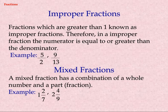Improper Fractions. Fractions which are greater than one are known as improper fractions. Therefore, in an improper fraction the numerator is equal to or greater than the denominator. Examples: five by two, nine by thirteen.